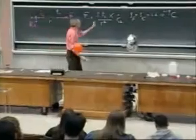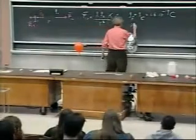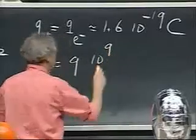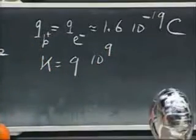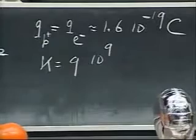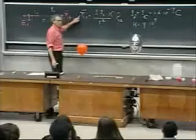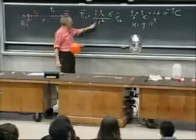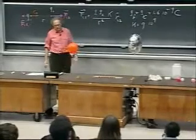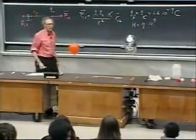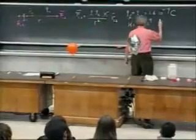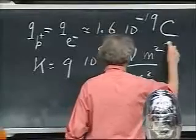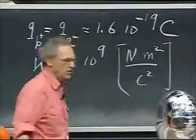This constant K in SI units is nine times ten to the ninth. And the unit you can find out because you know that this is Newtons, this is Coulombs squared, and this is square meters. So the unit is Newton square meters divided by square Coulombs. But that's not so important. No one ever thinks of it that way.